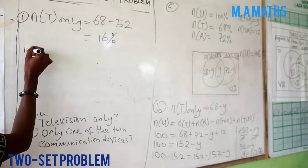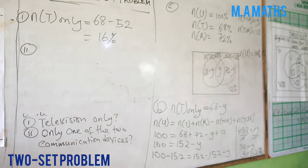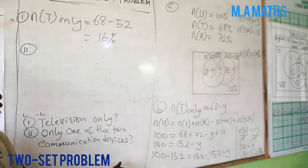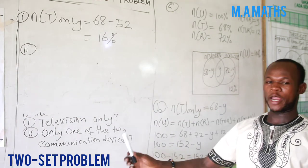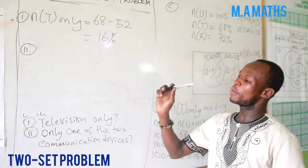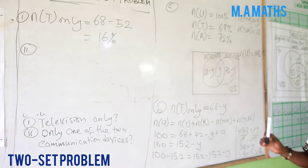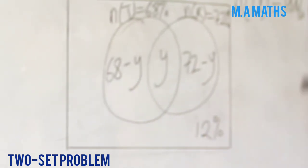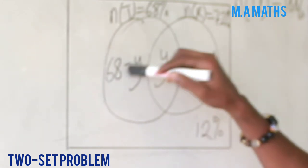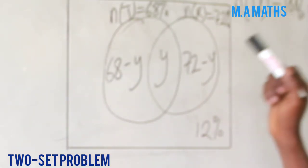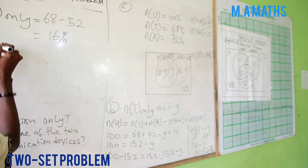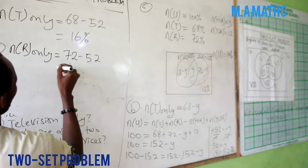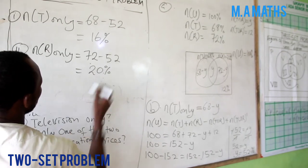Good. Roman numeral two. B Roman numeral two—we are asked to find only one of the two communication devices. To find only one of the two communication devices, we already know that means the people in the community that only have television or only have radio. For that matter we need to find the radio only plus the television only, and we already know television only. So in that case let's find radio only. n(R) only will give us 72 minus 52, and this gives us 20 percent.